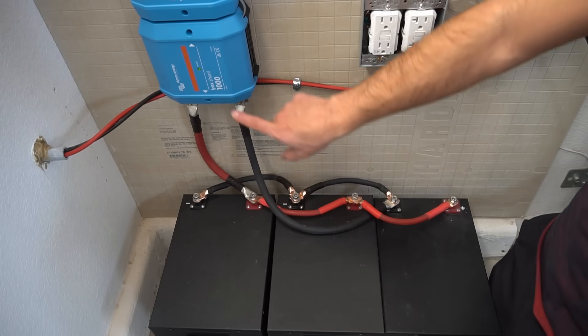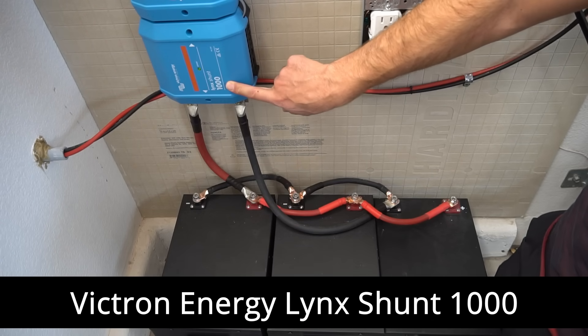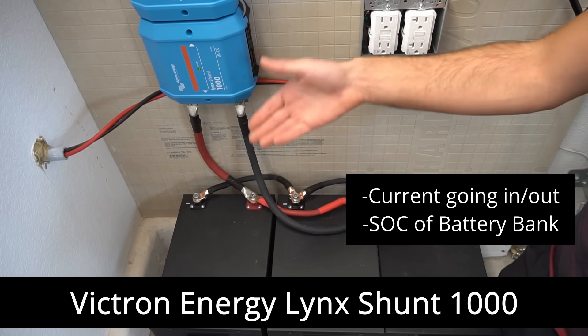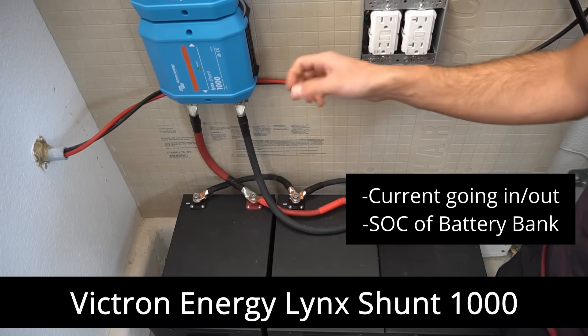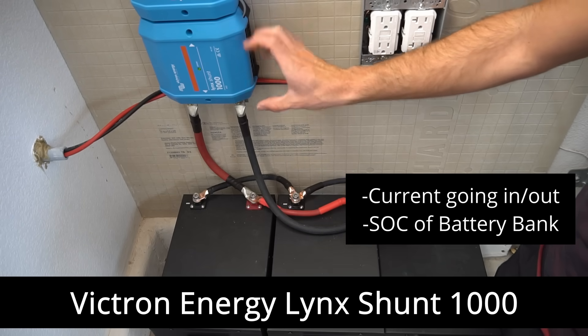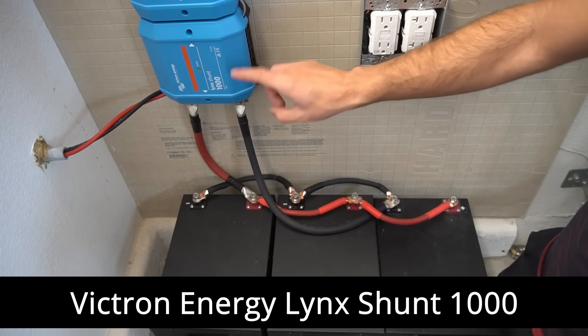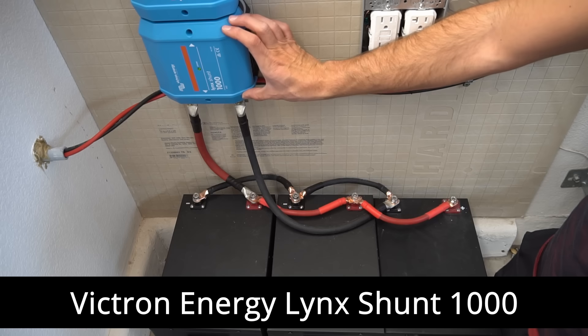Now these batteries are connected to the Victron Energy Lynx shunt 1000, and this allows you to calculate how much power is going in or out of the batteries and the state of charge. These are fantastic. They can handle 1000 amps and they can communicate with all the other components in a Victron energy system.